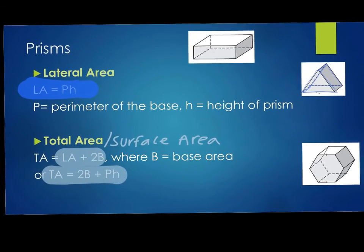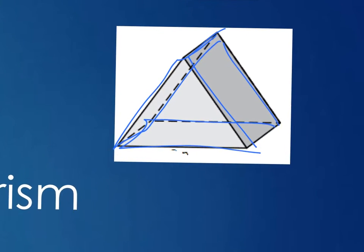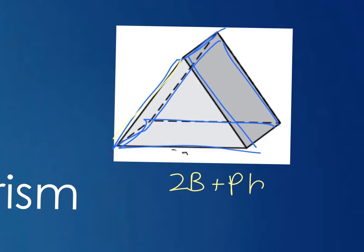For the triangular prism: once you find the area of one triangle, you multiply by 2 for the total base contribution. Then the perimeter of the base — add up the three sides of the triangle — times the height of the prism gives you the three rectangular lateral areas. So for total area: 2B plus Ph. If the base is a hexagon or pentagon or octagon, you have to use the polygon area formula.